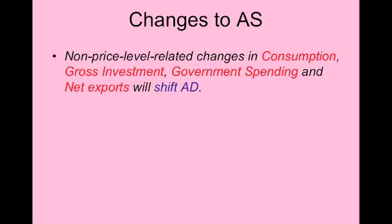Aggregate supply can shift. With aggregate demand, you had to keep in mind all the things that would change each sector's spending habits — if household spending changed, AD changed; if business spending changed, AD changed; government spending, international sector spending. There are lots of things to keep in mind when you shift AD.